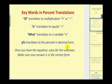Once we have the equation, we will solve for the unknown and then make sure that the answer is in the correct form — which means if they ask for a number, we leave it as a number; if they ask for a percent, we write it as a percent.